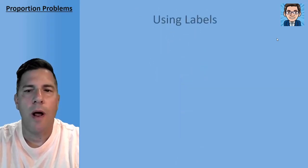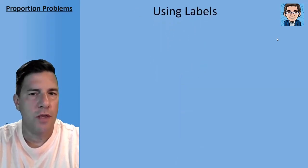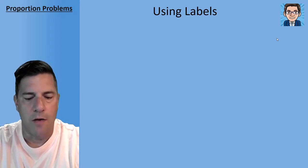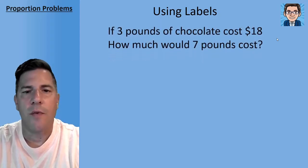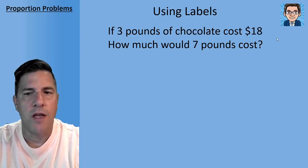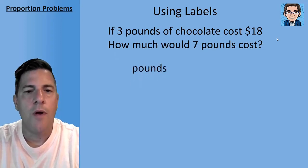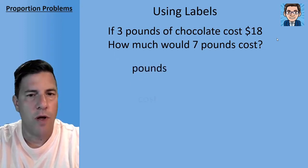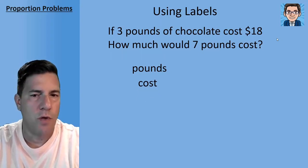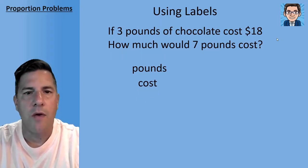Now when we're looking at word problems, it helps to use labels so that we know that we get the right thing in the numerator and the right thing in the denominator. In this simple example here, we've got three pounds of chocolate that costs $18. How much would it cost for seven pounds? I'm going to go ahead and put the pounds in the numerator and the cost in the denominator. Now it doesn't matter which way you do it, but it does matter that you're consistent.